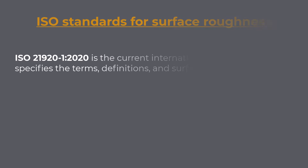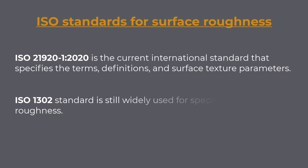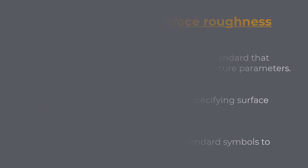ISO Standards for Surface Roughness: ISO 21920-1-2020 is the current international standard that specifies the terms, definitions, and surface texture parameters. However, the ISO 1302 standard is still widely used for specifying surface roughness, and most CAD software still uses ISO 1302 standard symbols to indicate surface roughness. For this reason, we will use ISO 1302 standard symbols, but we will draw a parallel with the ISO 21920-1-2020 standard symbols.